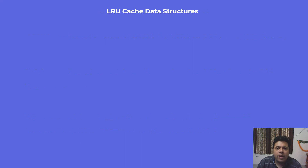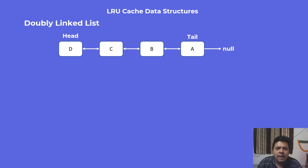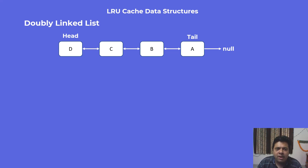Considering these three rules, we need to look at what kind of data structures can help us achieve this behavior. One of the first data structures that comes to mind is a doubly linked list. In a normal singly linked list, each node points to the next node. A doubly linked list takes that forward — each node knows about the next node as well as the previous node. This property allows us to have constant time insertions and deletions, which is very important for our LRU cache. However, accessing an element is still an issue if we just use a plain doubly linked list, because we need constant time access, so we need another data structure.